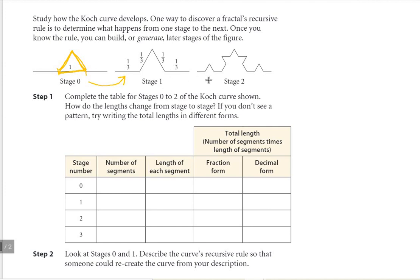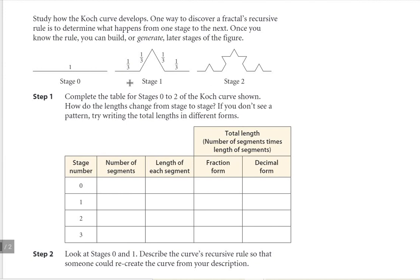From stage one to stage two, we do the same exact thing on all four of the segments. On this first segment, what we did to get from stage one to stage two is we split that segment into thirds, created an equilateral triangle, and then basically erased out that bottom piece. That's kind of how we're creating it. The important piece we're really looking at is the length of the sides.